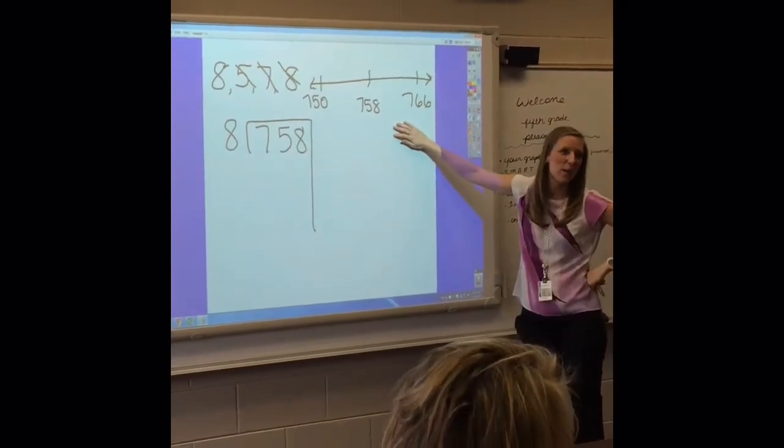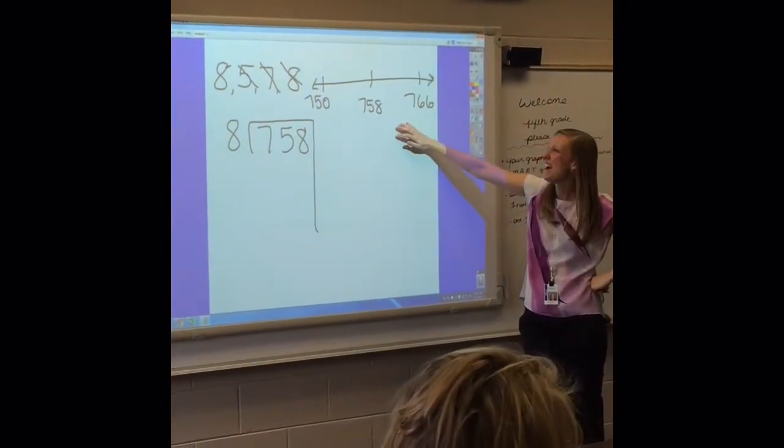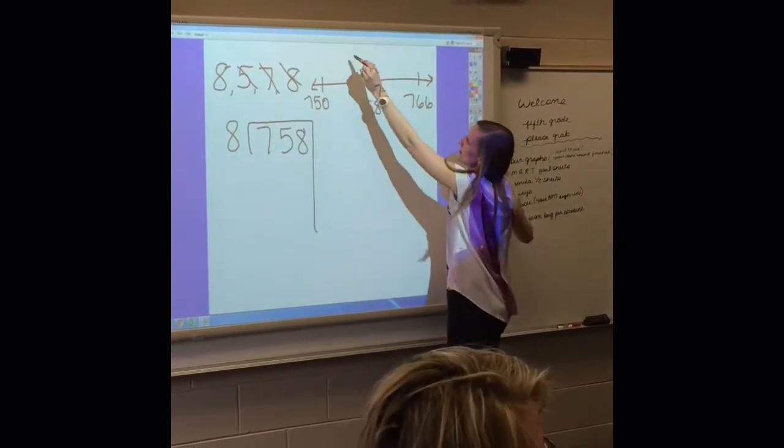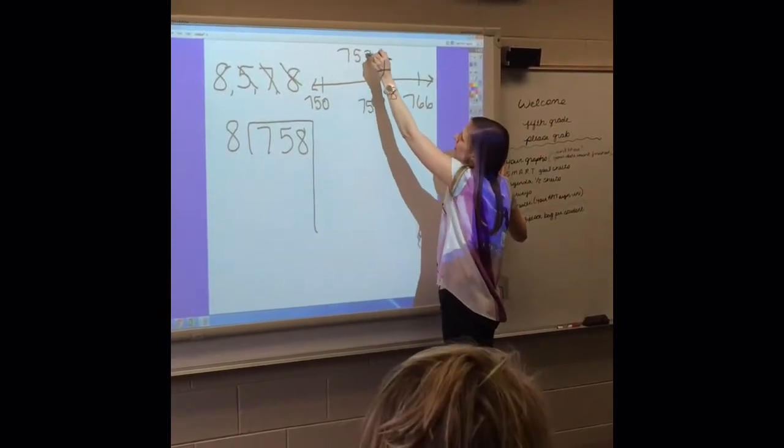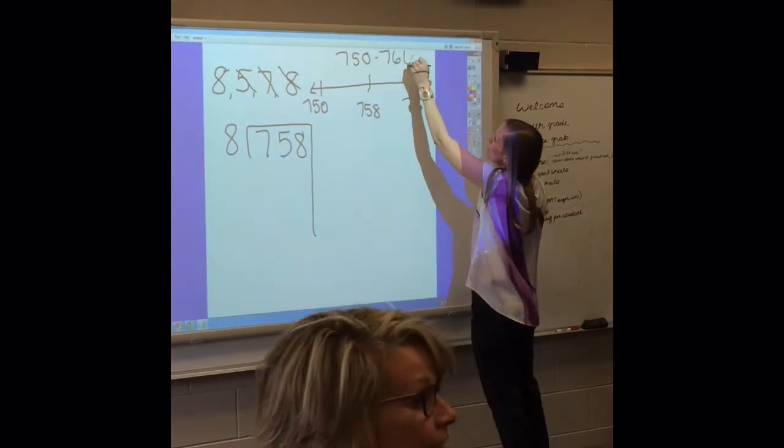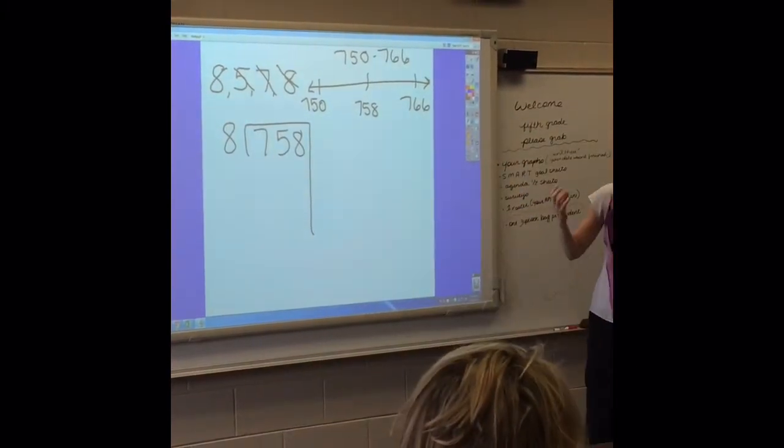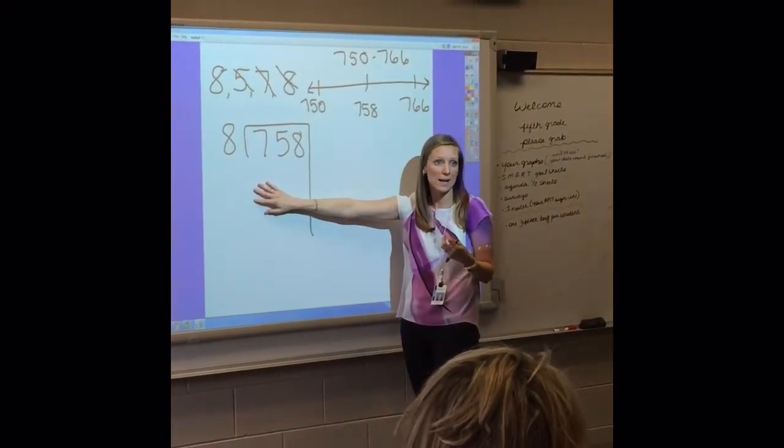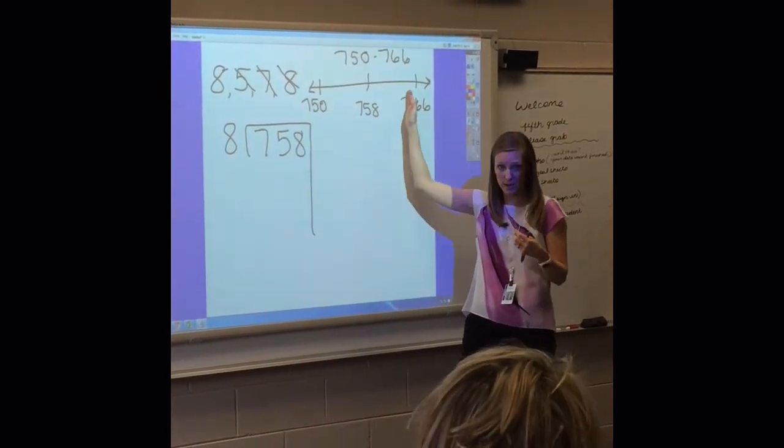That's okay, brain freezes happen all the time. Okay, so we have a range of 750 to 766, which means our answer can fall in between those numbers, okay? All right, so we're looking at 758.